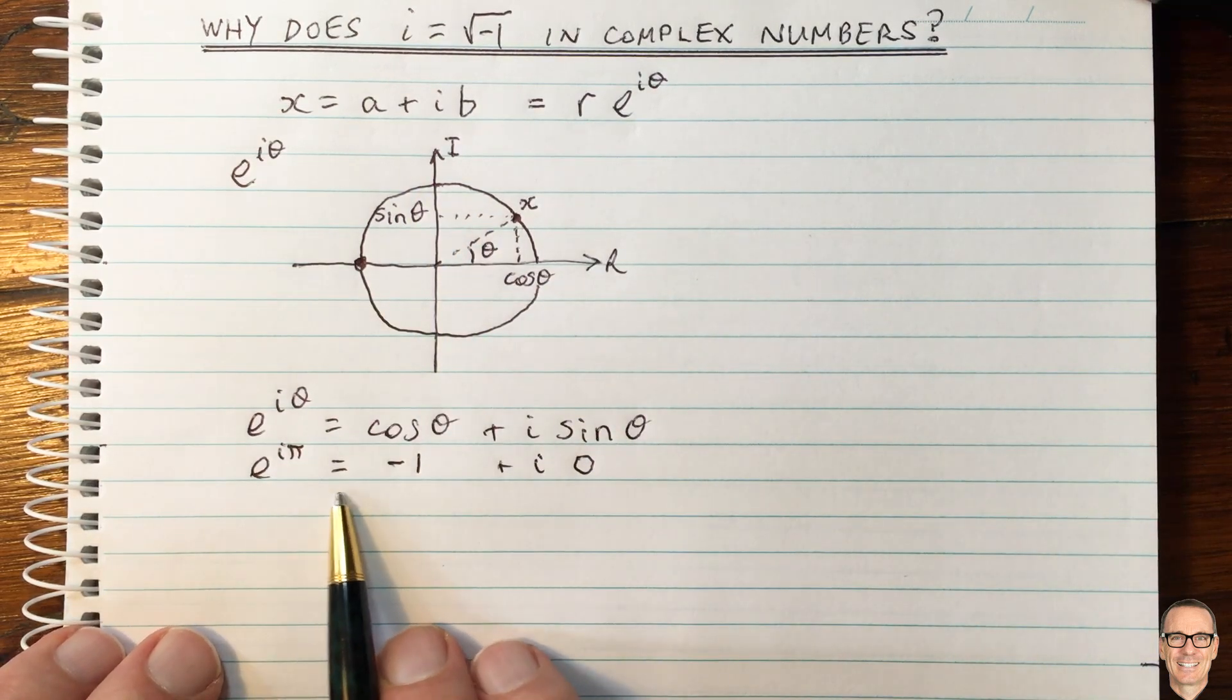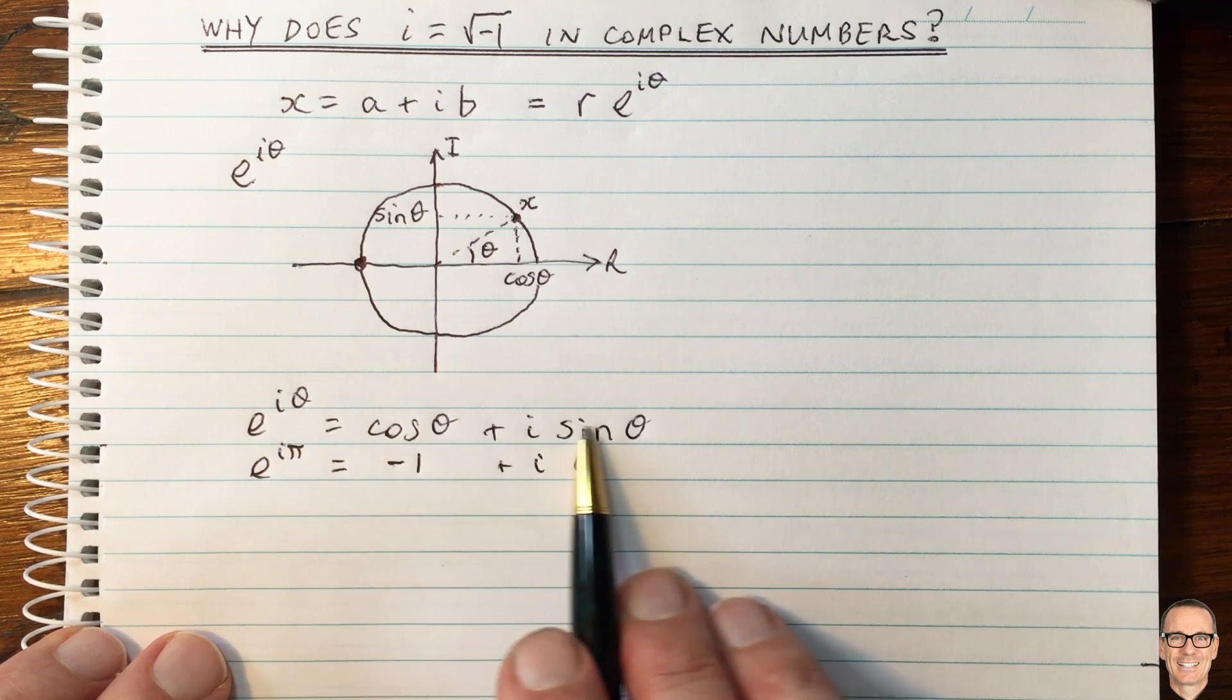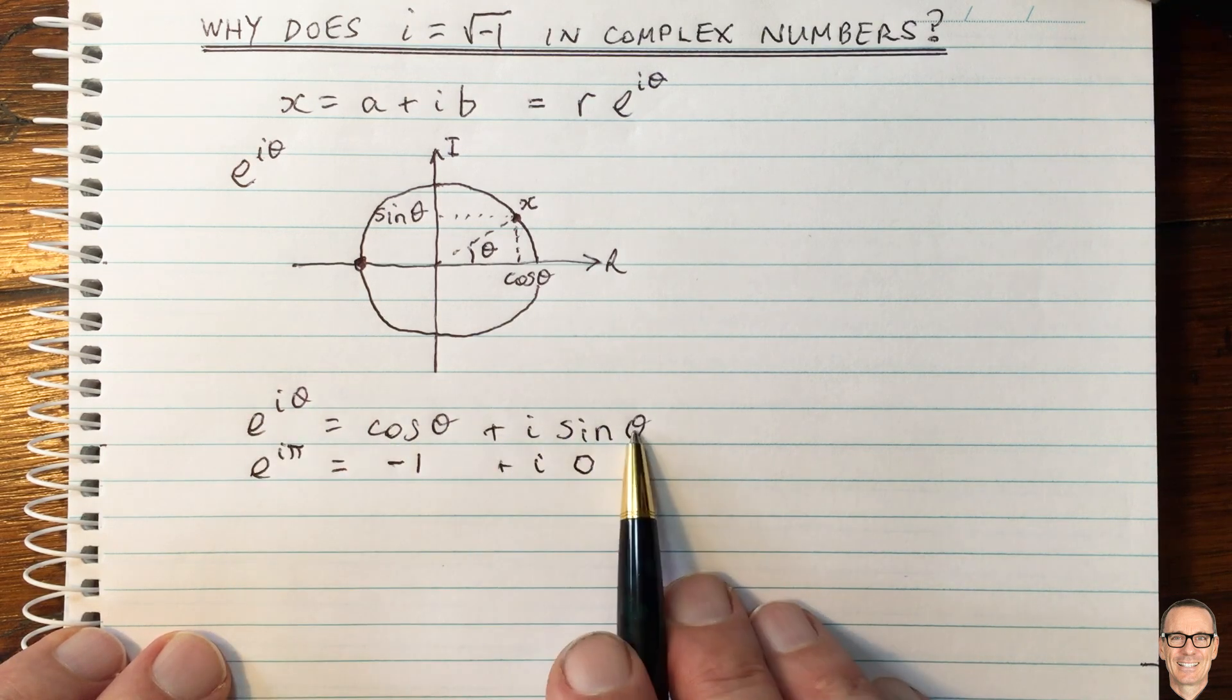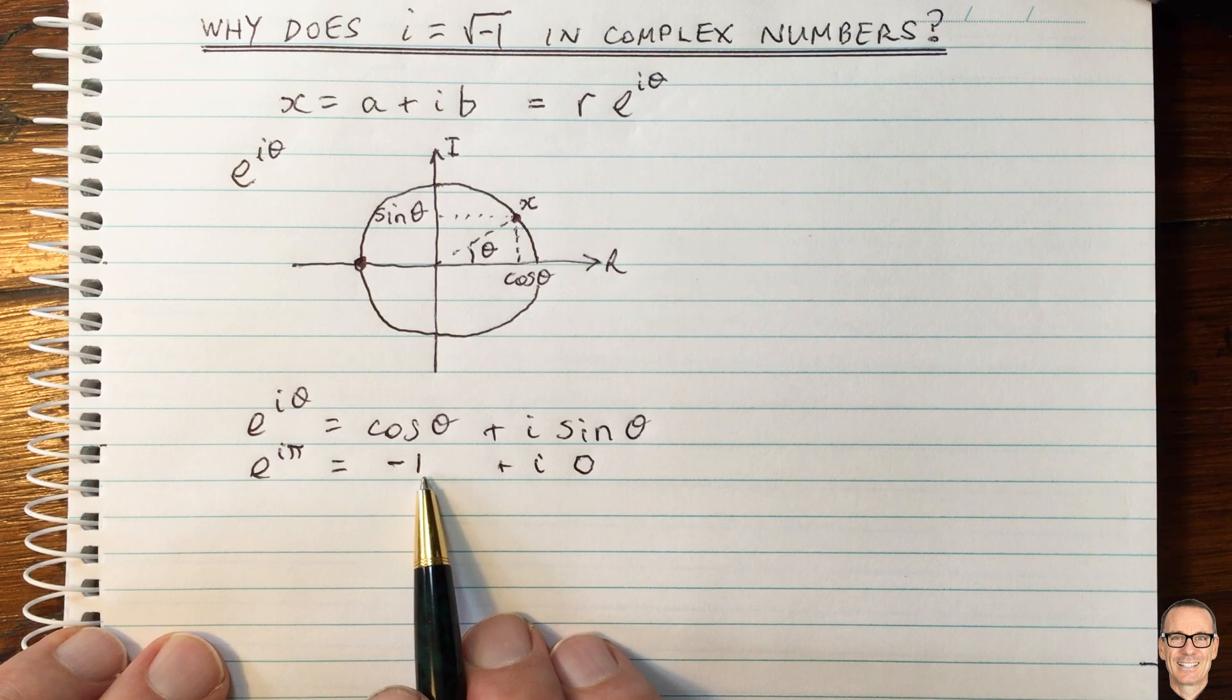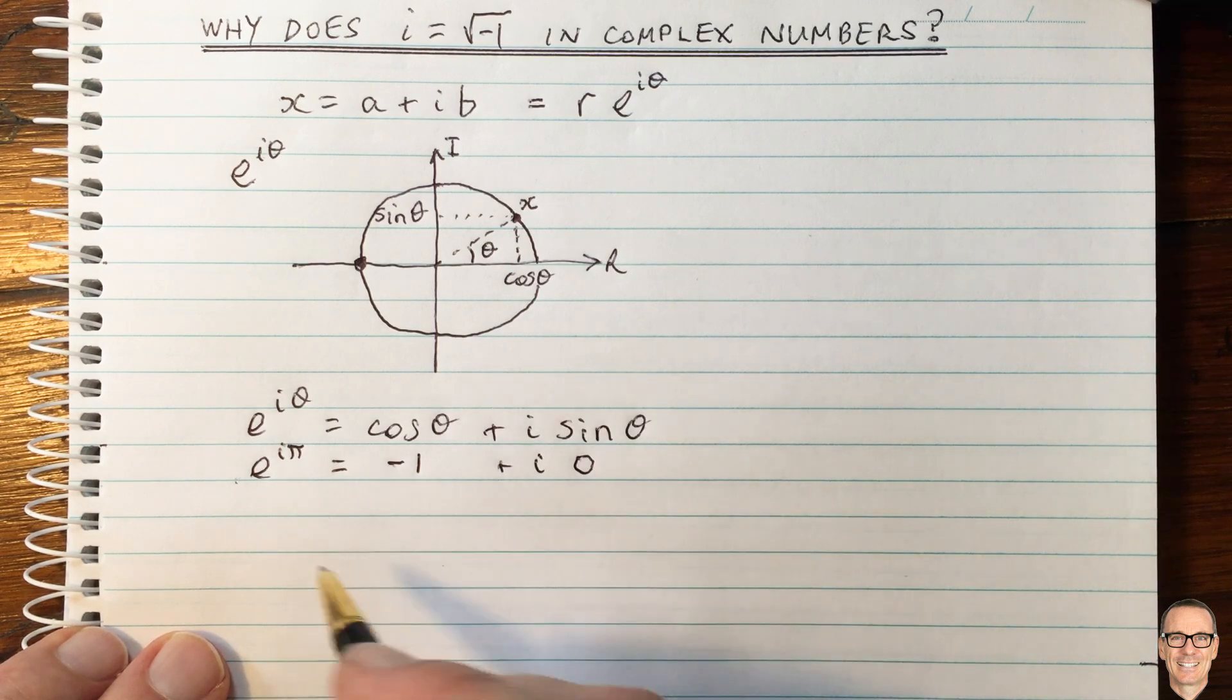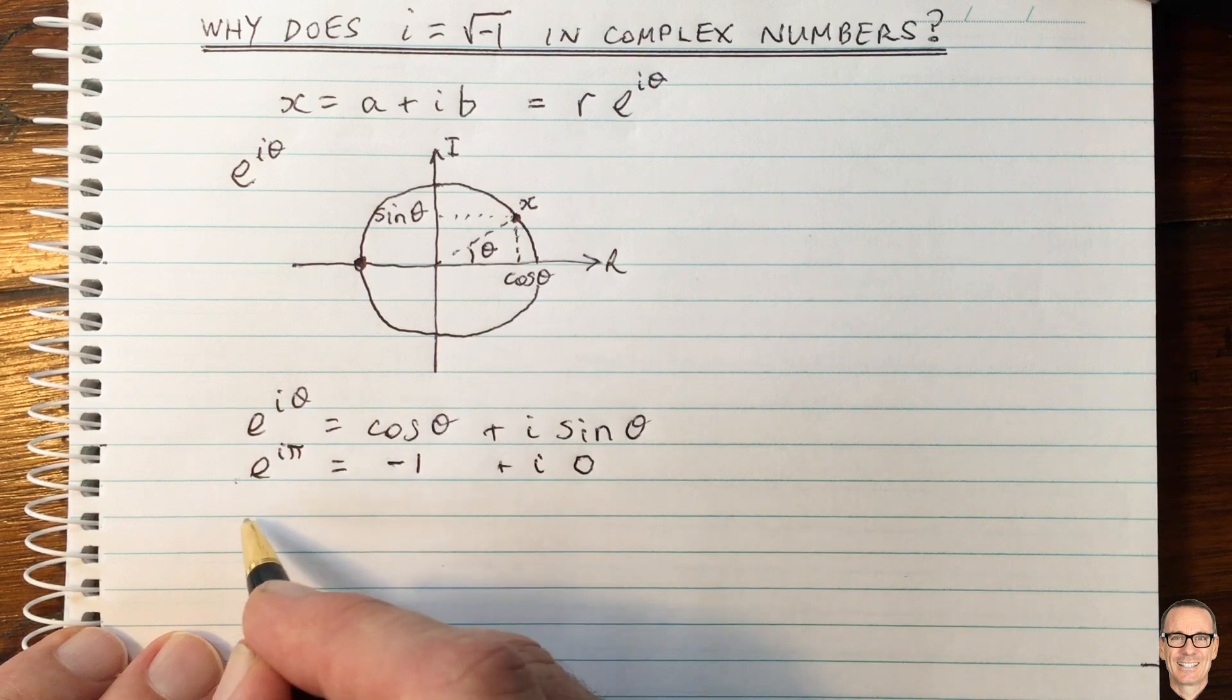Okay, so this gives us an equation. This one here is known as Euler's equation, and this one here is known as Euler's identity. So now we can use this to break this component up here.